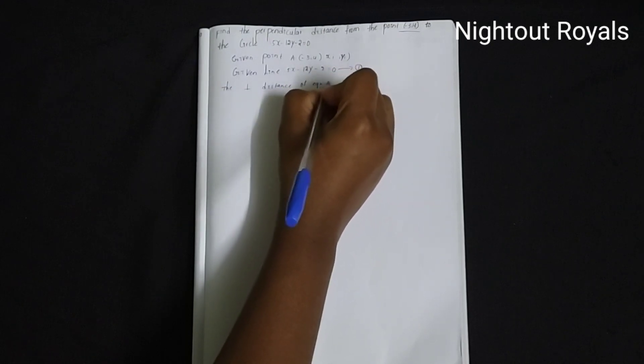The perpendicular distance of equation 1 and passing through the point A, x, y equal to minus 3, 4 is